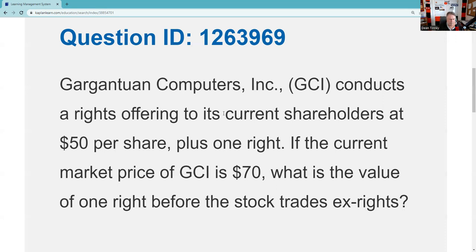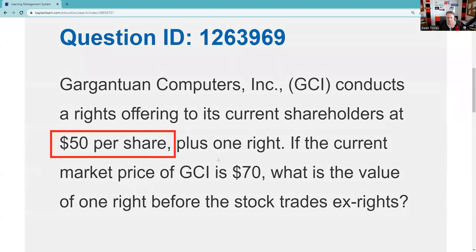It takes one right to get an additional share, so now we have two key pieces of information: our exercise price and our number of rights needed. As many shares as you have, that's how many rights you have. So if you have 1,000 shares, you have 1,000 rights. The issuer specifies how many rights are needed — here it says one right. Importantly, you don't have a right to increase your proportionate ownership; you have the right to maintain it.